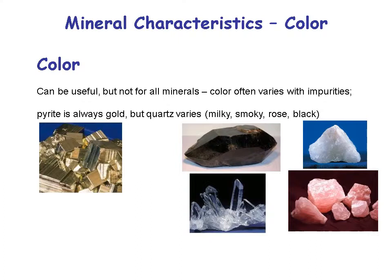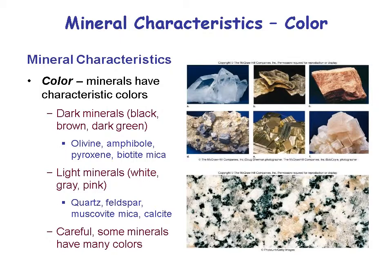Color is a characteristic you can use to identify a mineral, and color often varies with impurities. Pyrite is always gold, but quartz — with just silicon and oxygen — can have minor amounts of other elements giving it a milky, smoky, rose, or black color. Dark minerals include olivine, amphibole, pyroxene, and biotite mica. Light minerals include quartz, feldspar, muscovite mica, and calcite.